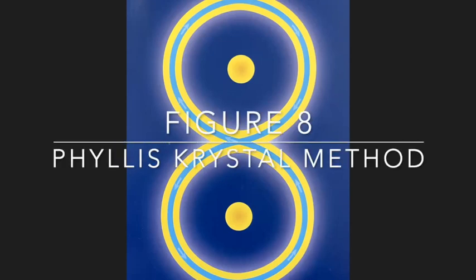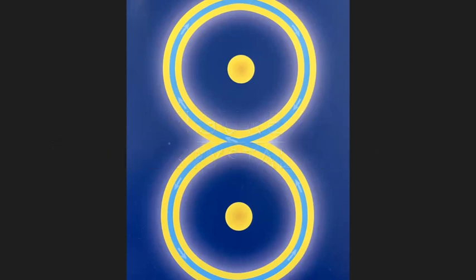Figure eight. The figure eight temporarily stops the control of each person over the other and also from a non-human control factor such as habits, addictions, etc.